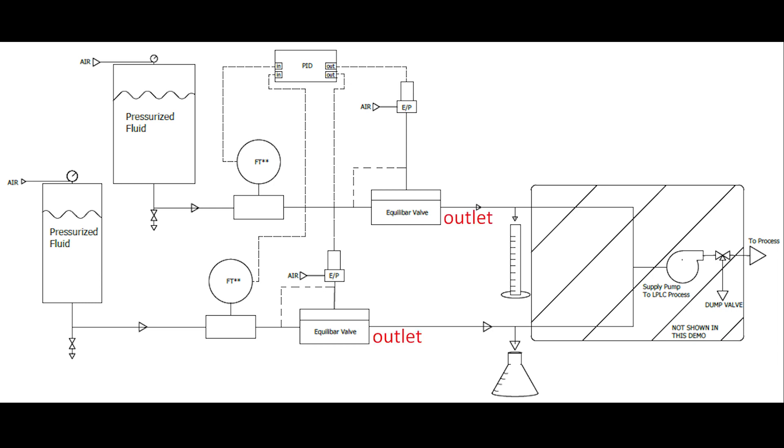In the demonstration that we'll show today, at the outlet of the two valves, the lines are open to the atmosphere and dispensing into two different graduated cylinders. In an actual process, this would feed either a supply pump to a low pressure liquid chromatography system or a dump valve that would be used for the settling time at the beginning of a buffer system production.